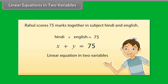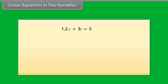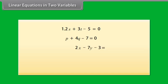Some other examples of linear equations in two variables are: 1.2S plus 3T equals 5; P plus 4Q equals 7; and 3 equals 2X minus 7Y. We can put these in the form: 1.2S plus 3T minus 5 equals 0; P plus 4Q minus 7 equals 0; and 2X minus 7Y minus 3 equals 0. So any equation which can be put in the form AX plus BY plus C equals 0, where A, B, and C are real numbers and A and B are not both zero, is called a linear equation in two variables.